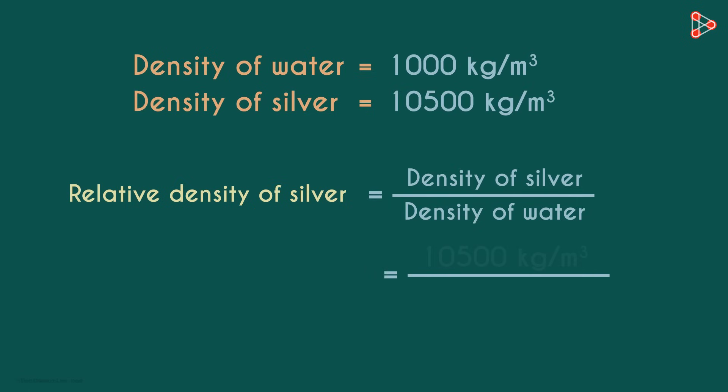It will equal the density of silver over the density of water. Substituting the values here, we get the answer as 10.5. That's the relative density of silver.